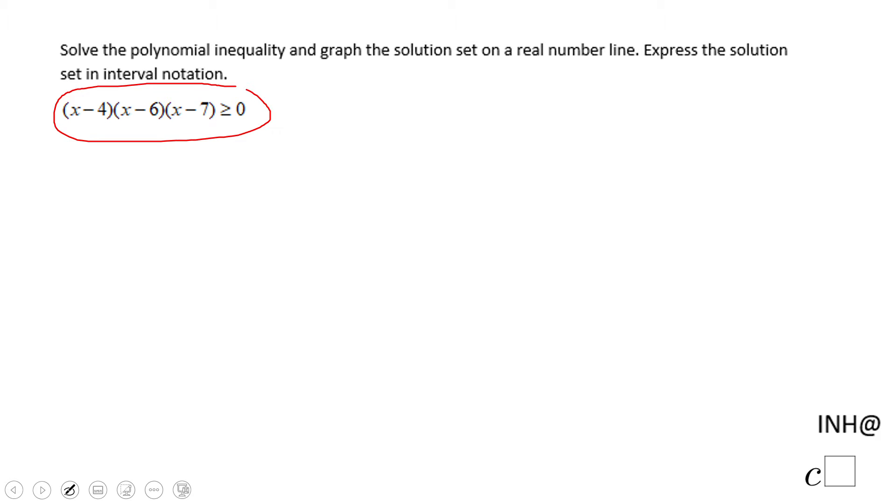The first thing we want to do is set up this polynomial inequality equal to zero, the polynomial expression, to find out when it is zero.